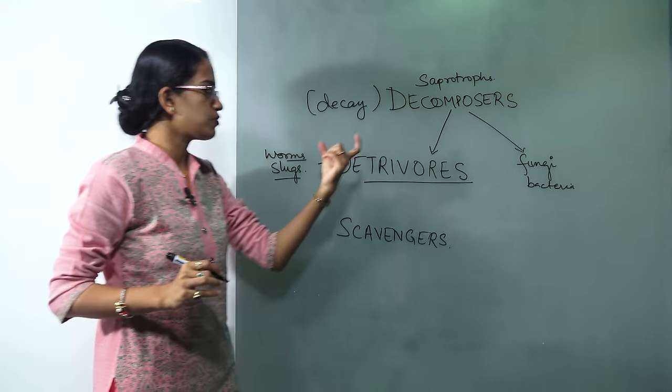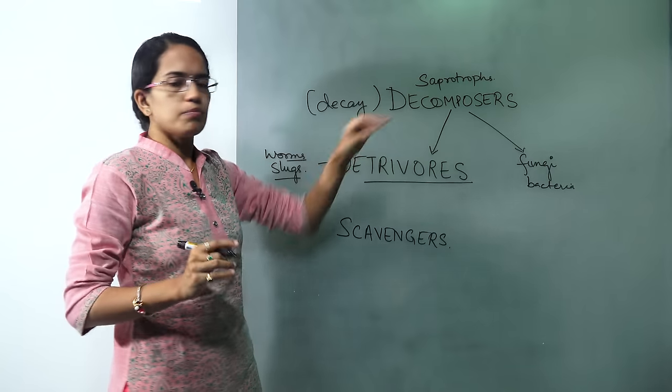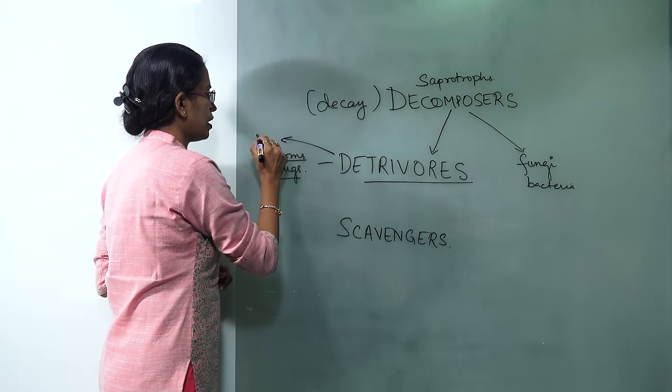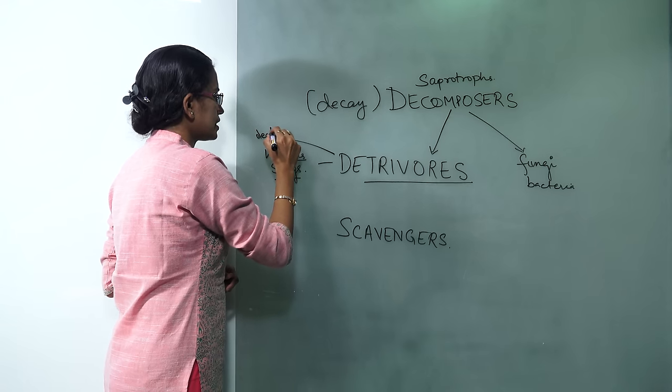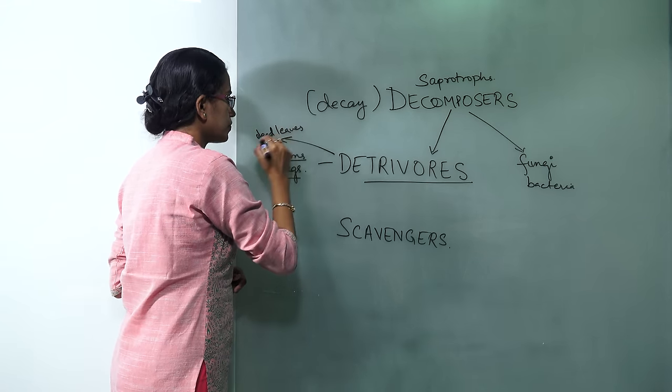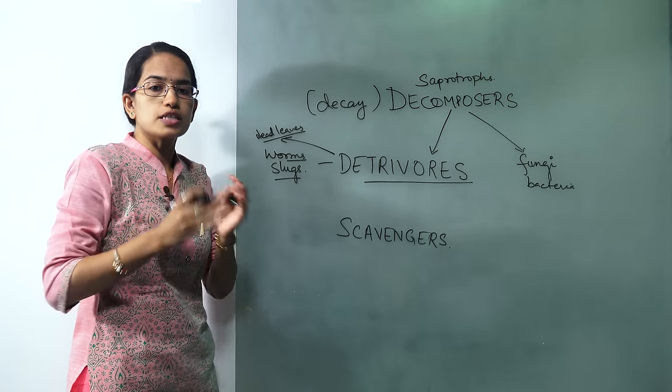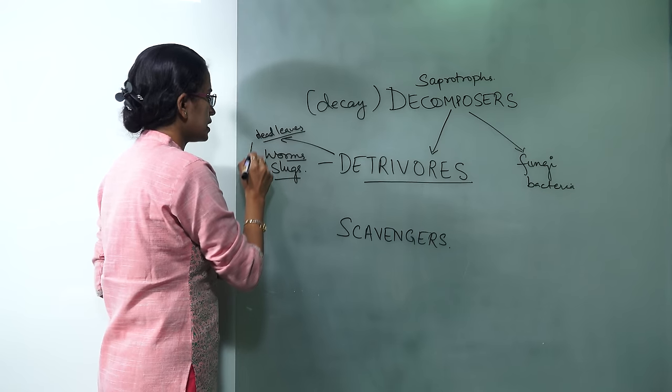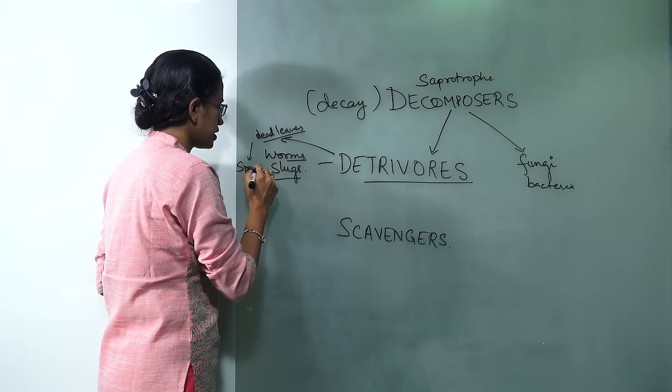So what basically detrivores do is further break down decomposing material. So let's say the dead leaves that earthworm consumes are further broken down, and these broken particles basically speed up the process of decomposition.